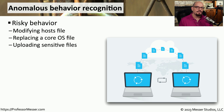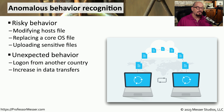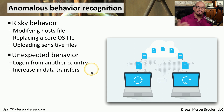We're also looking for anything that might be unusual on a user's workstation. We refer to this as anomalous behavior recognition, and we can start by looking for any type of risky behavior. This could include a person or service modifying a host file on a device, replacing a core operating system file, or uploading sensitive files from that device. We're also looking for unexpected behavior — someone logging in from another country or an increase in the amount of data transfers from a device.